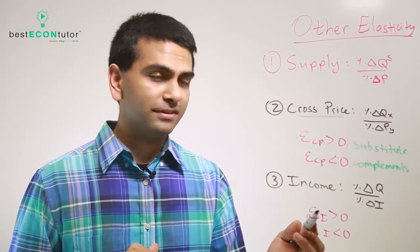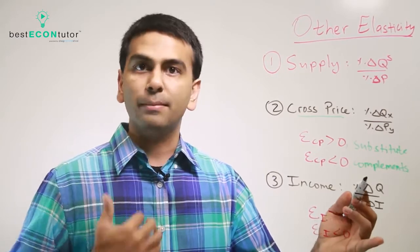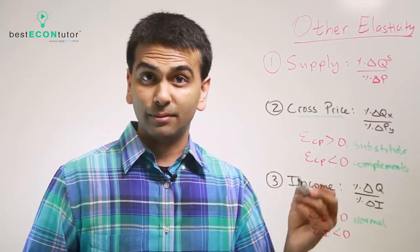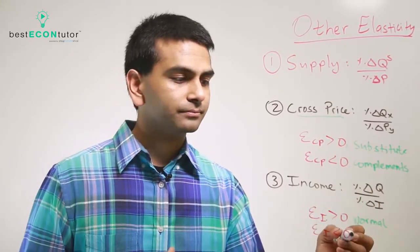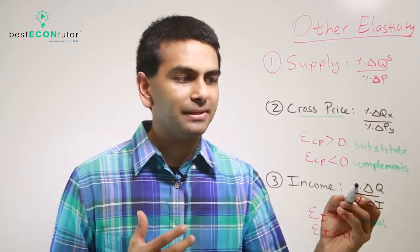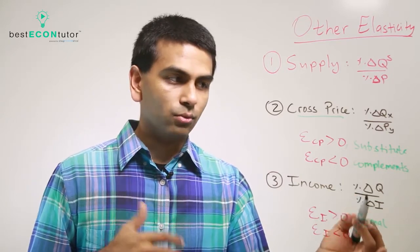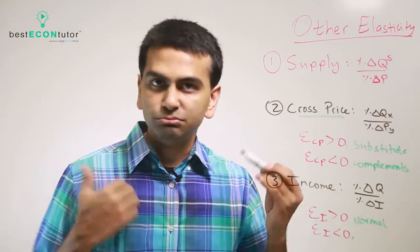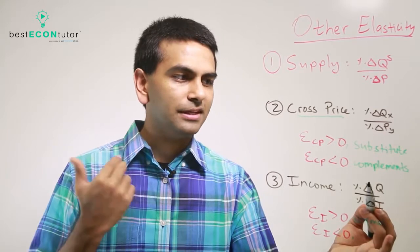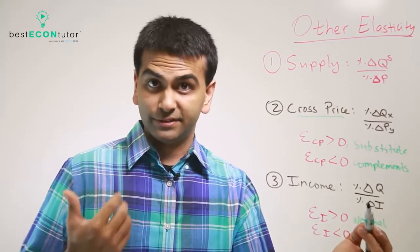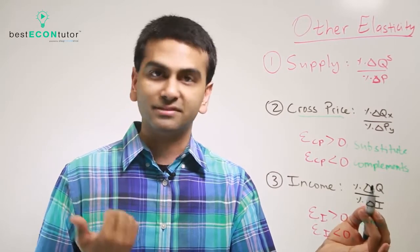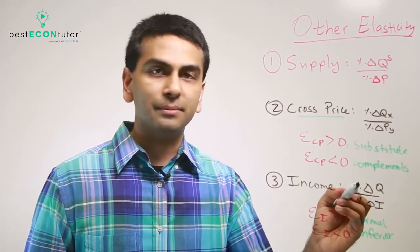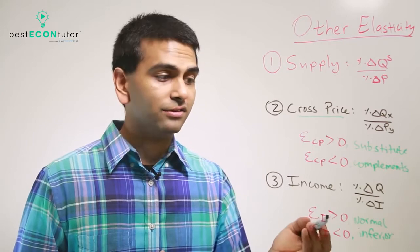Conceptually, if income elasticity is positive, it means as your income goes up you want to buy more of that good — that's just a normal good, something you want more of when income rises and less of when income falls. But if income elasticity is negative, that happens when the denominator is positive but the numerator is negative — your income goes up but you want less ramen noodles, for example. That makes it an inferior good. So income elasticity being positive or negative tells you whether a good is normal or inferior.